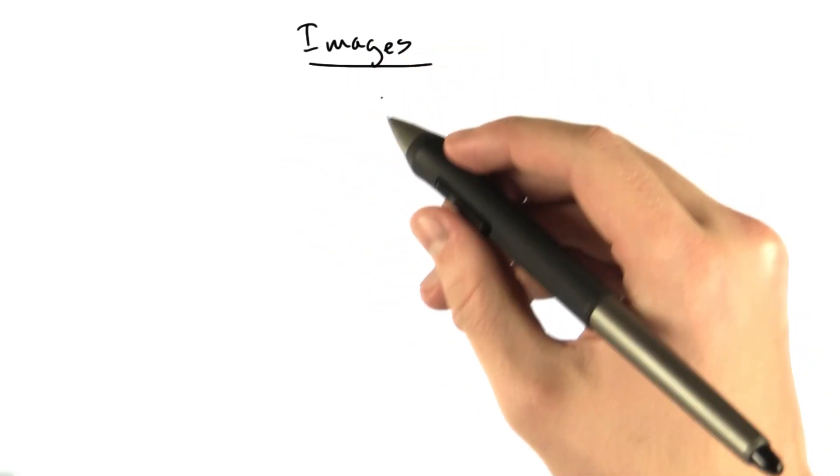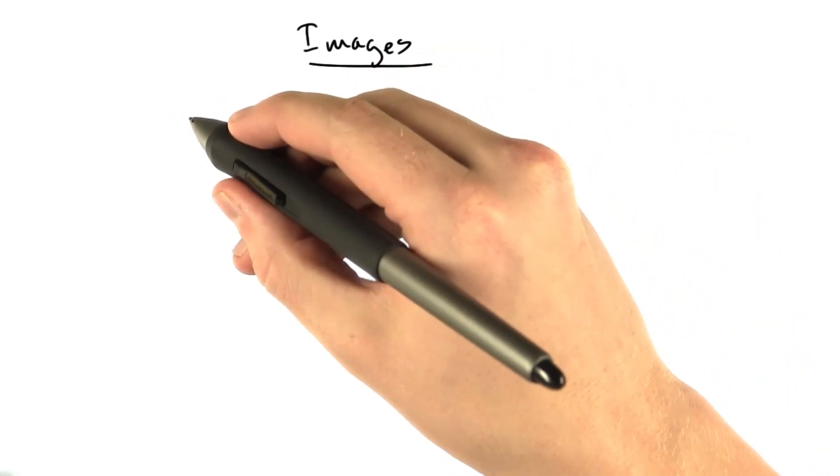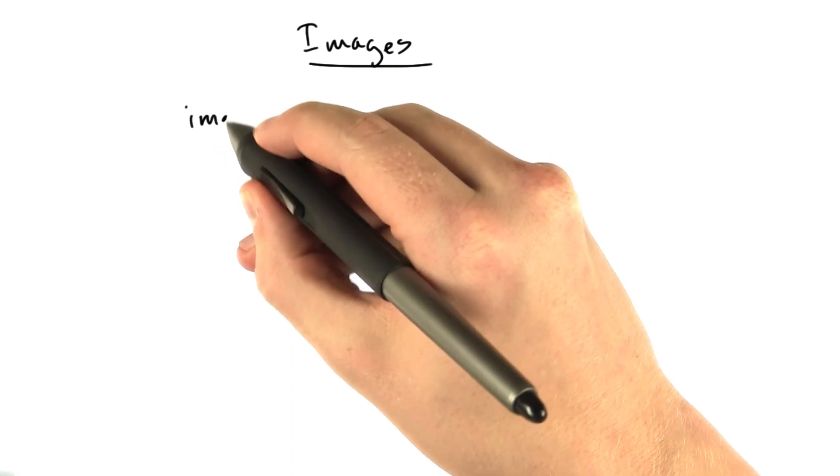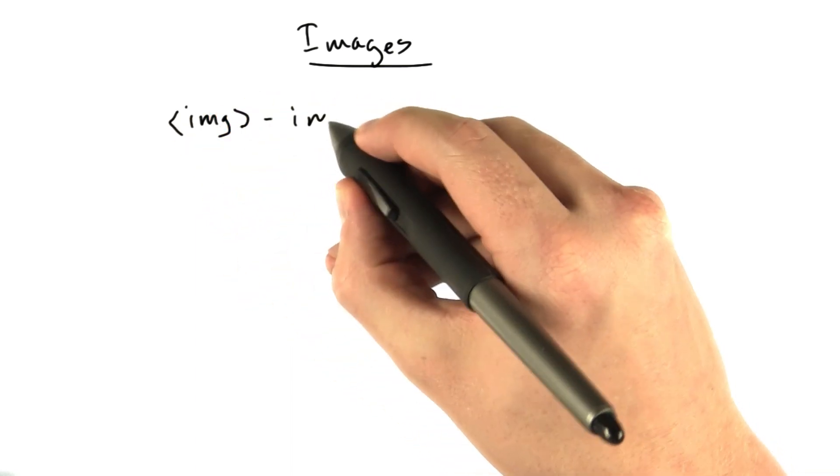All right, so let's learn another tag. This one is the image tag. It looks like this: img, and this is for including images.